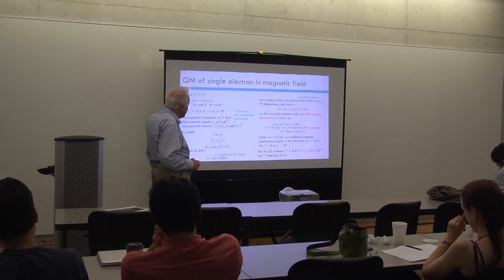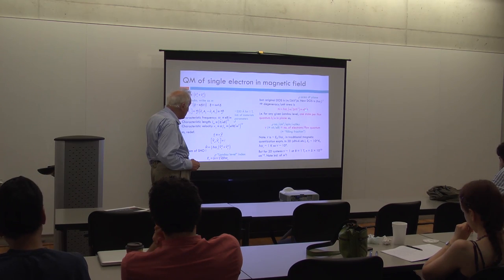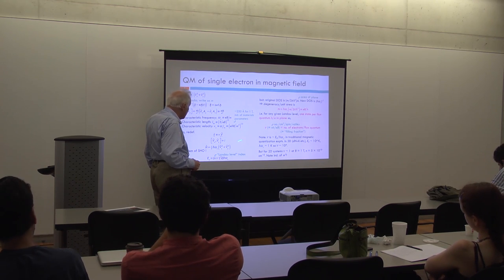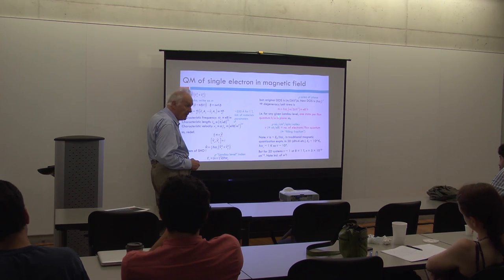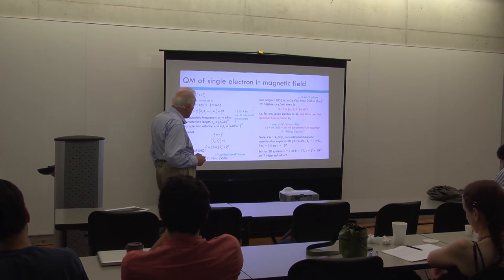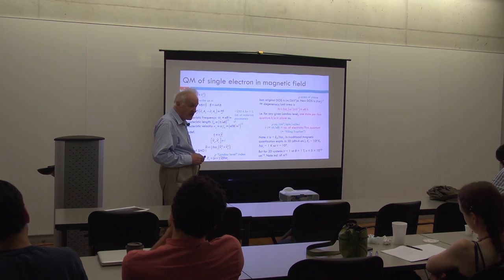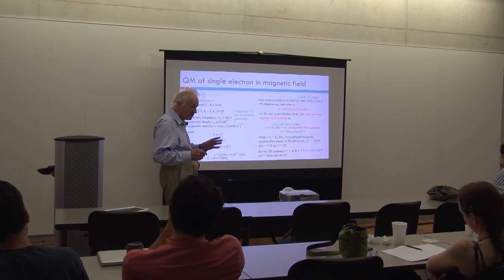That's quite striking. In the absence of the magnetic field, the energy levels were ℏ²k²/2m with a density of states proportional to the area — in fact in two dimensions the density of states is simply a constant. In the presence of a magnetic field, we get simply these quantized Landau levels. The degeneracy per unit area for each Landau level must be eB/h — in other words, for any given Landau level there is exactly one state per flux quantum h/e in the plane.